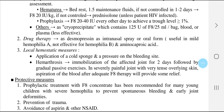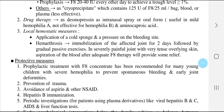Second, drug therapy: desmopressin as intranasal spray or oral form is useful in mild hemophilia A but not effective for hemophilia B. Sometimes aminocaproic acid is also used. Third, local hemostatic measures: application of cold sponge and pressure on the bleeding site. In cases of hemarthrosis, immobilization of the affected joint for 2 days followed by gradual passive exercise. In severe painful joints with very tense overlying skin, aspiration of blood after adequate factor 8 therapy will provide some relief.